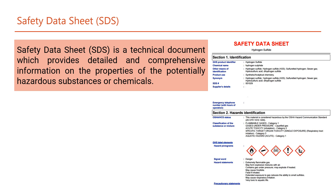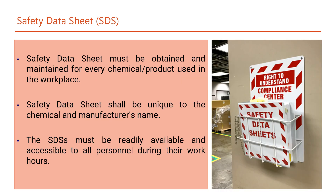A Safety Data Sheet, SDS, is a technical document which provides detailed and comprehensive information on the properties of potentially hazardous substances or chemicals. Safety Data Sheets must be obtained and maintained for every chemical product used in the workplace, shall be unique to the chemical and manufacturer's name, and must be readily available and accessible to all personnel during their work hours.